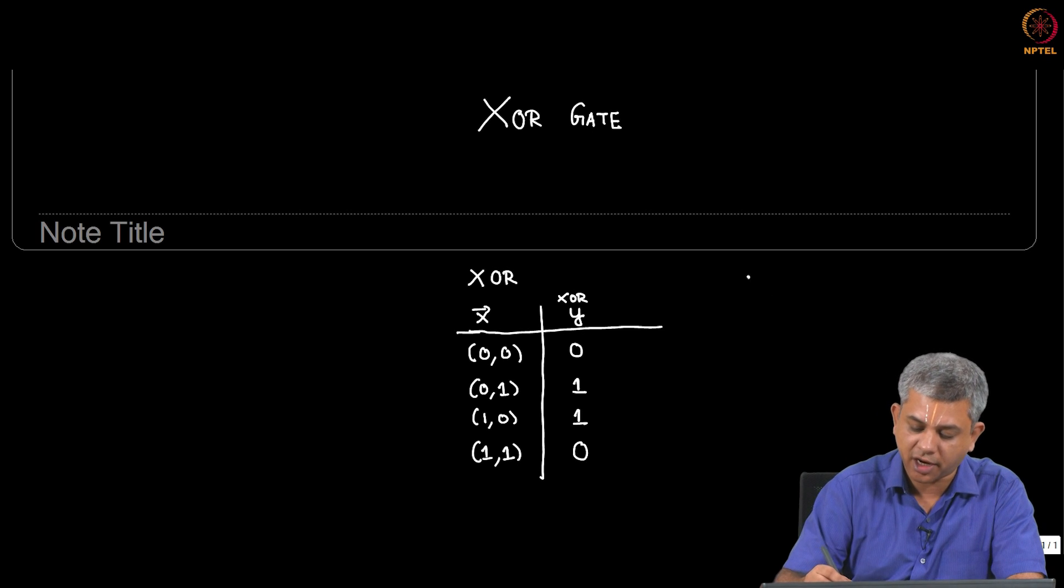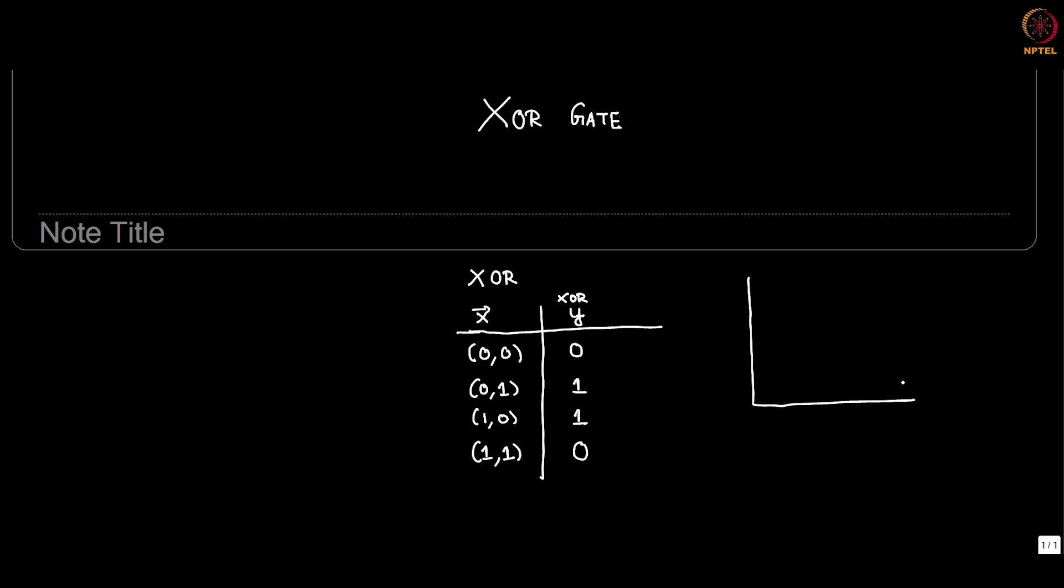Let us try and represent this graphically in order to see what the problem is for logistic regression. In case of 00 and 11 you get 0, and in case of 01 and 10 you get 1. So we have 2 classes, this red class or the X class and the O class.